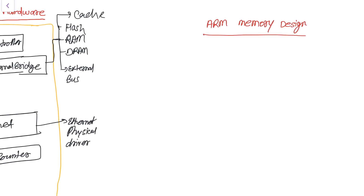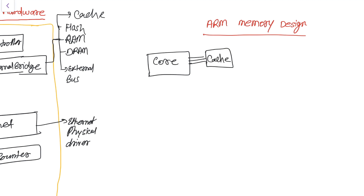These are the memories used in microcontroller design. If here is a core of the processor, the first type of memory highly coupled with this core is cache memory. Cache is the first level of memory, and the second level is RAM, which is a little further from the core.